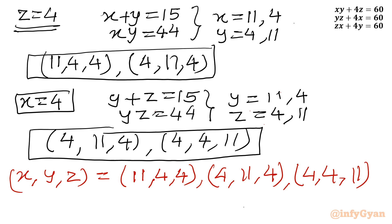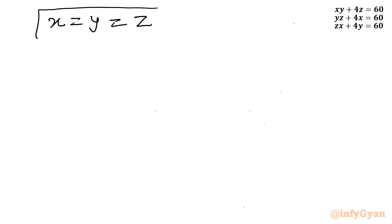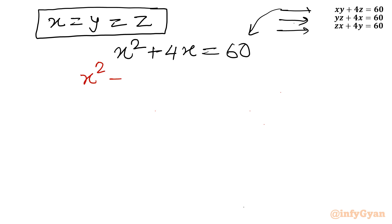Now the first case is pending: the condition from operation 1 was x equals z, from operation 2 was y equals x, and from operation 3 was z equals y. These simultaneously mean x equals y equals z. Applying this to equation 1: x squared plus 4x equals 60. Moving all terms to one side gives the quadratic: x squared plus 4x minus 60 equals 0.